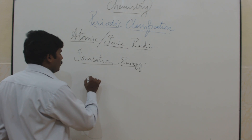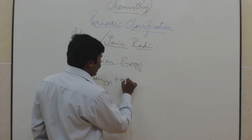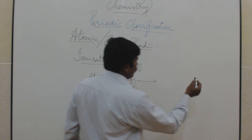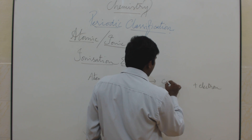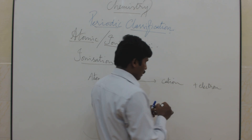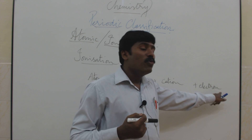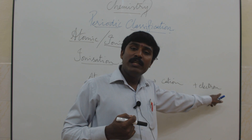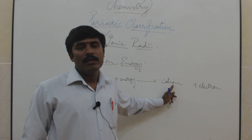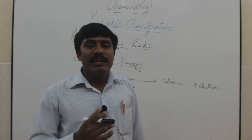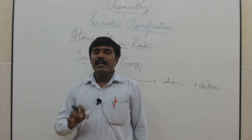Suppose this is one atom in the gaseous state. It takes a certain amount of energy to remove one electron from it. When that electron is removed, the atom becomes a positive ion — a cation — also in the gaseous state. The energy required for this process is called ionization energy.